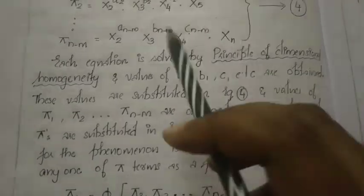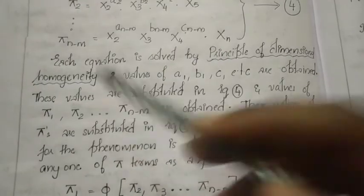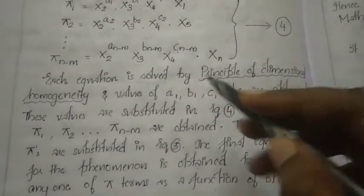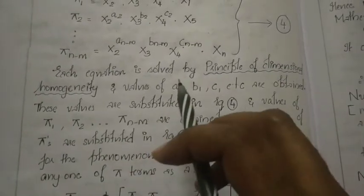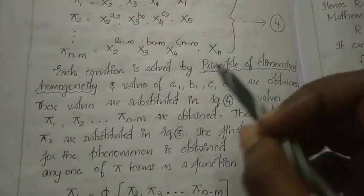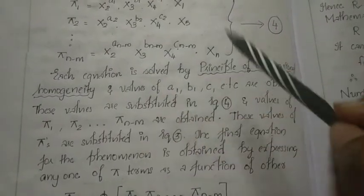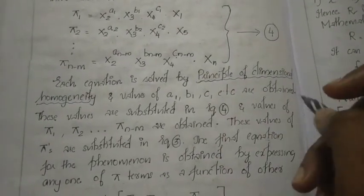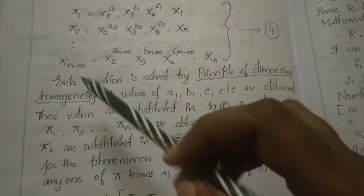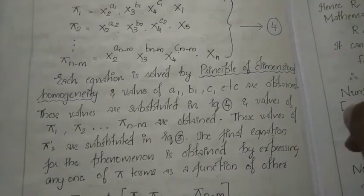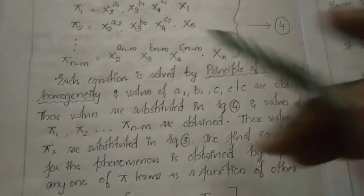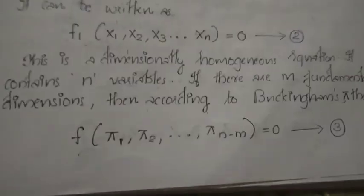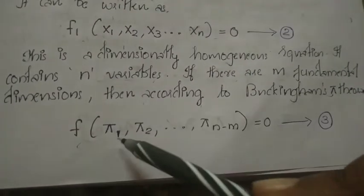Using the principle of dimensional homogeneity, we can solve for the exponent values a1, b1, c1, a2, b2, c2, etc. We substitute these solved values back into equation number 4 to obtain π1, π2, ... πn-m, and then substitute into equation number 3.